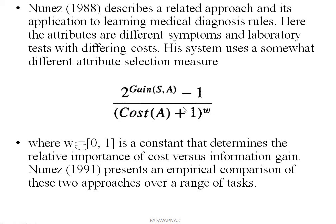In the formula, W is a constant belonging to [0, 1] that determines the relative importance of cost versus information gain. S is the collection or subset of examples, A is the attribute, and Cost(A) is the cost of that attribute. Depending upon the particular application, the formula may change slightly.